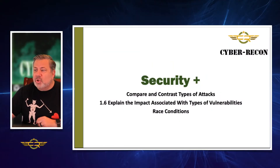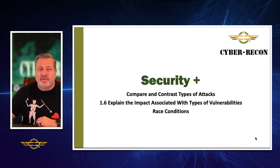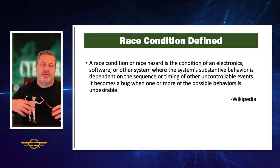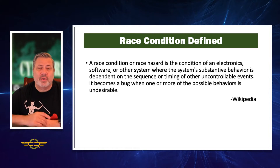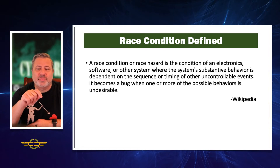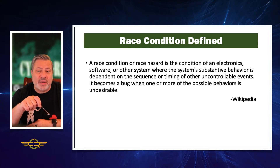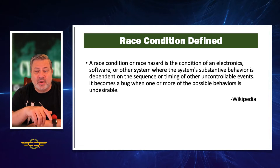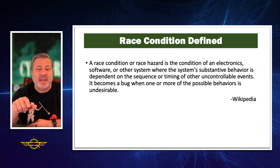When we look at race conditions, it's important to first define what a race condition is. This is a definition from Wikipedia: a race condition, or race hazard, is the condition of an electronics, software, or other system where the system's substantive behavior is dependent on the sequence or timing of other uncontrollable events. It becomes a bug when one or more of the possible behaviors is undesirable.